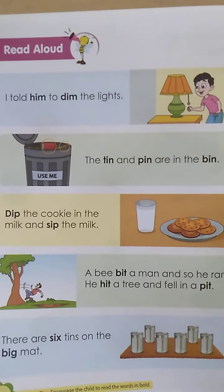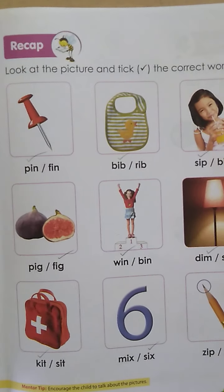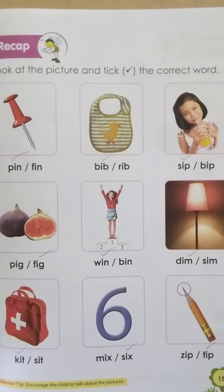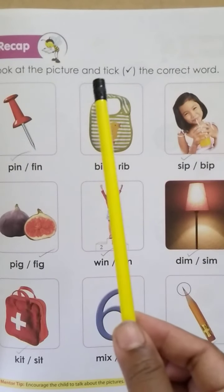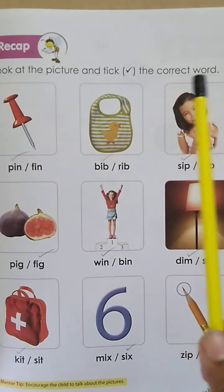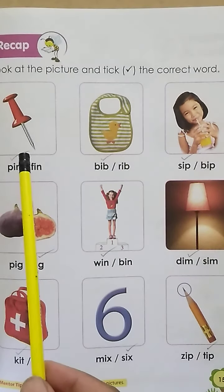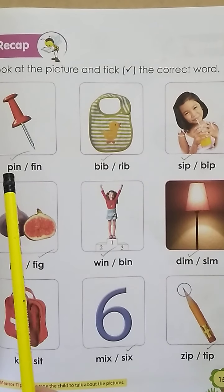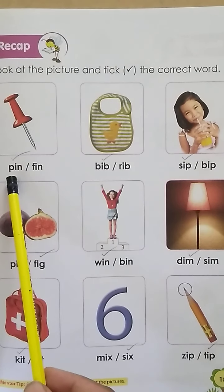Now let's move to the next page, that is page 15. Okay, here — look at the picture and tick the correct word. Now what is there in this picture? It's a pin. So you will tick on pin.